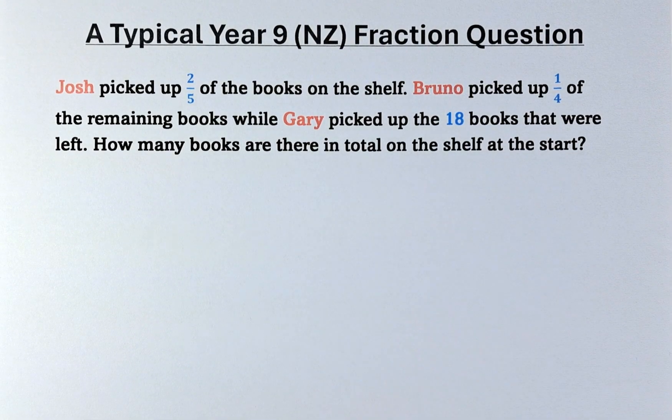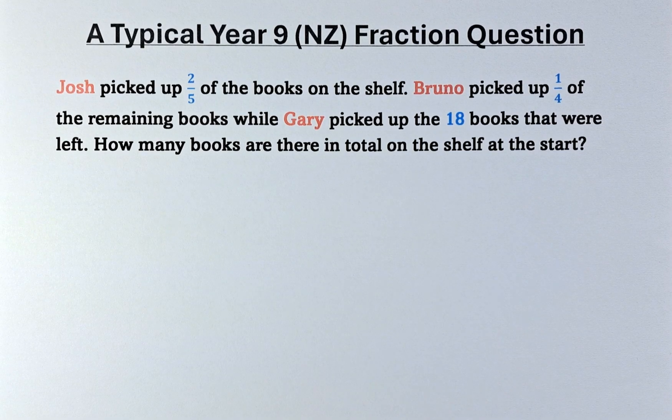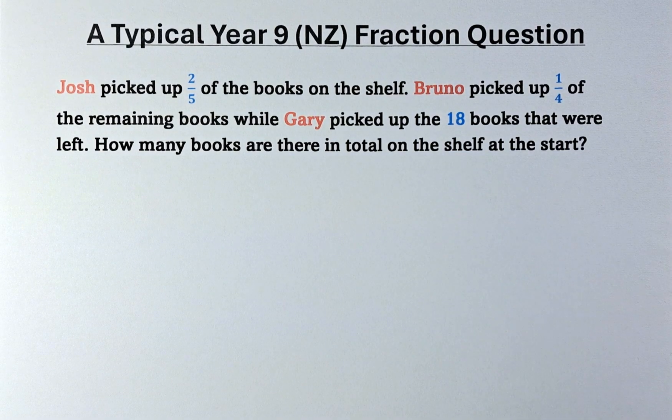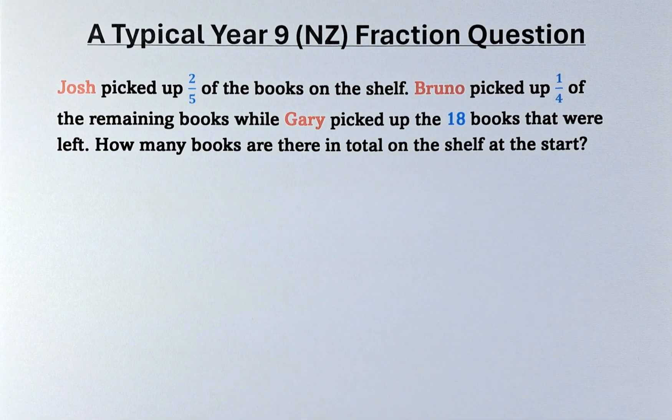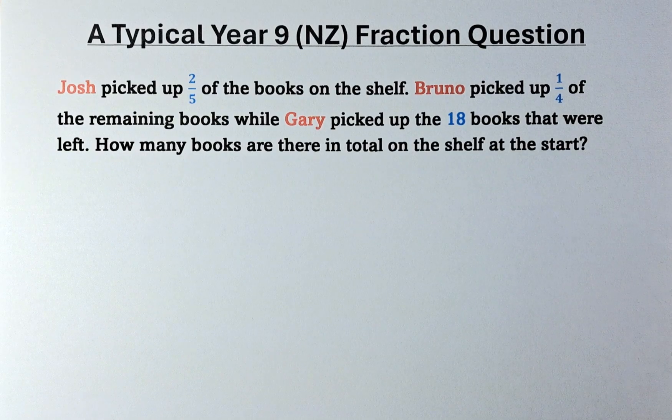Josh picked up two-fifths of the books on the shelf. Bruno picked up one-quarter of the remaining books, while Gary picked up the 18 books that were left. How many books are there in total on the shelf at the start?